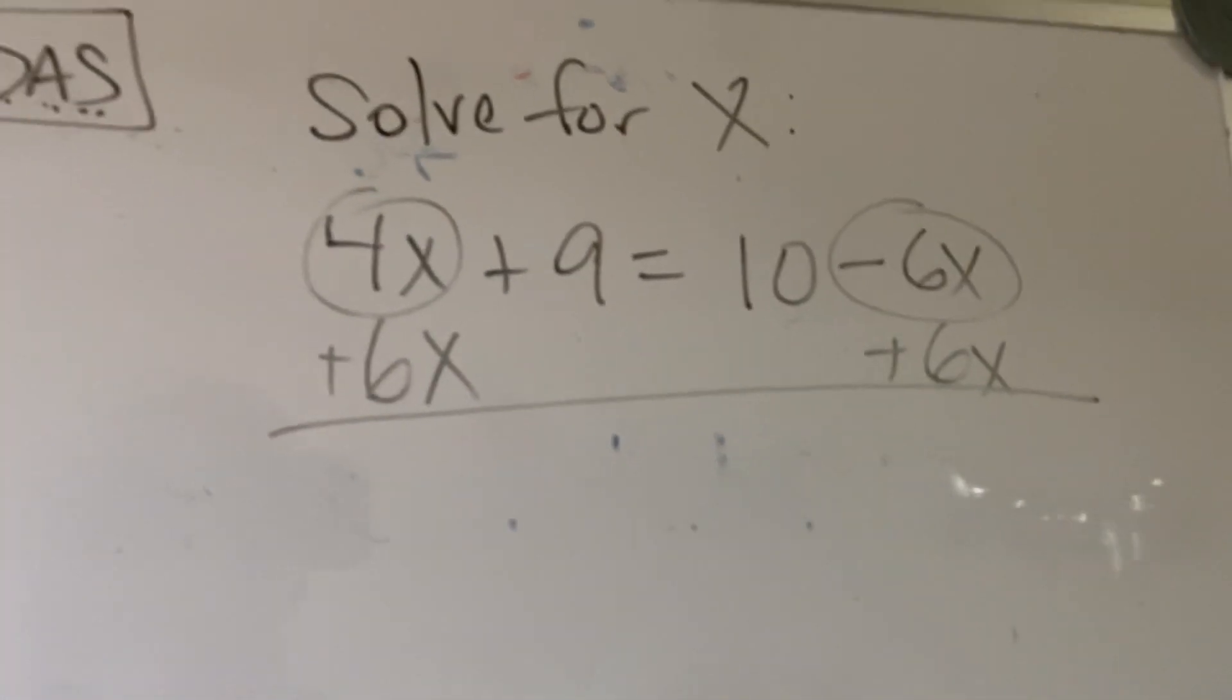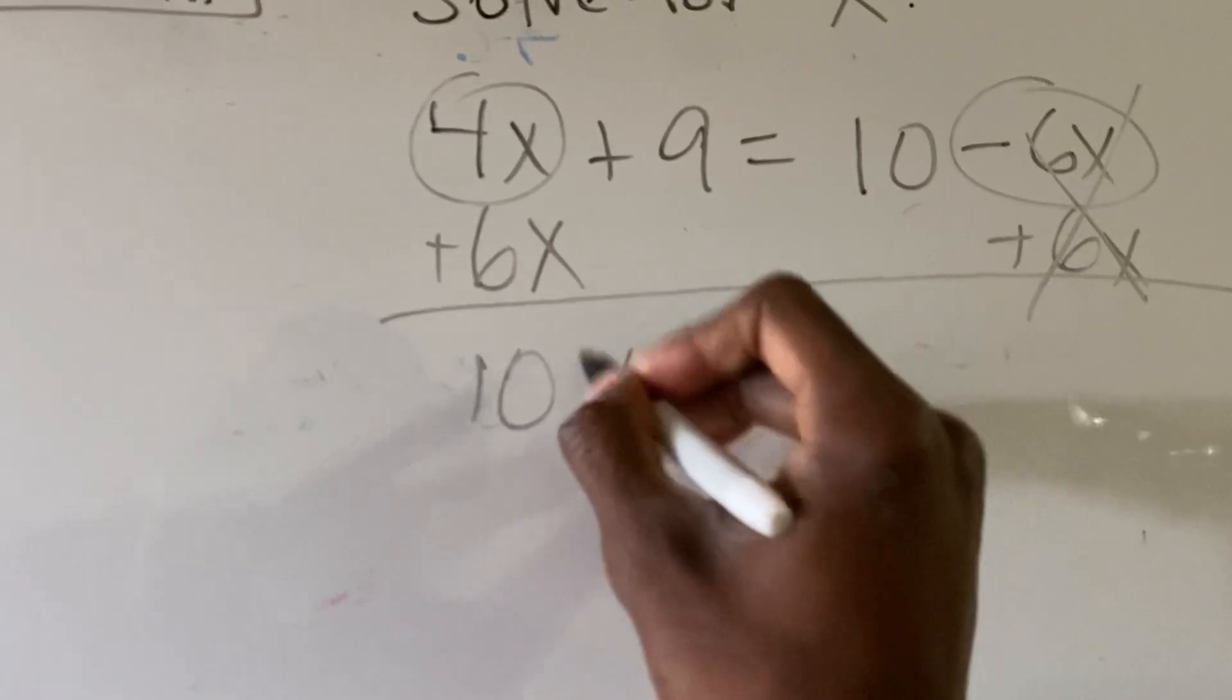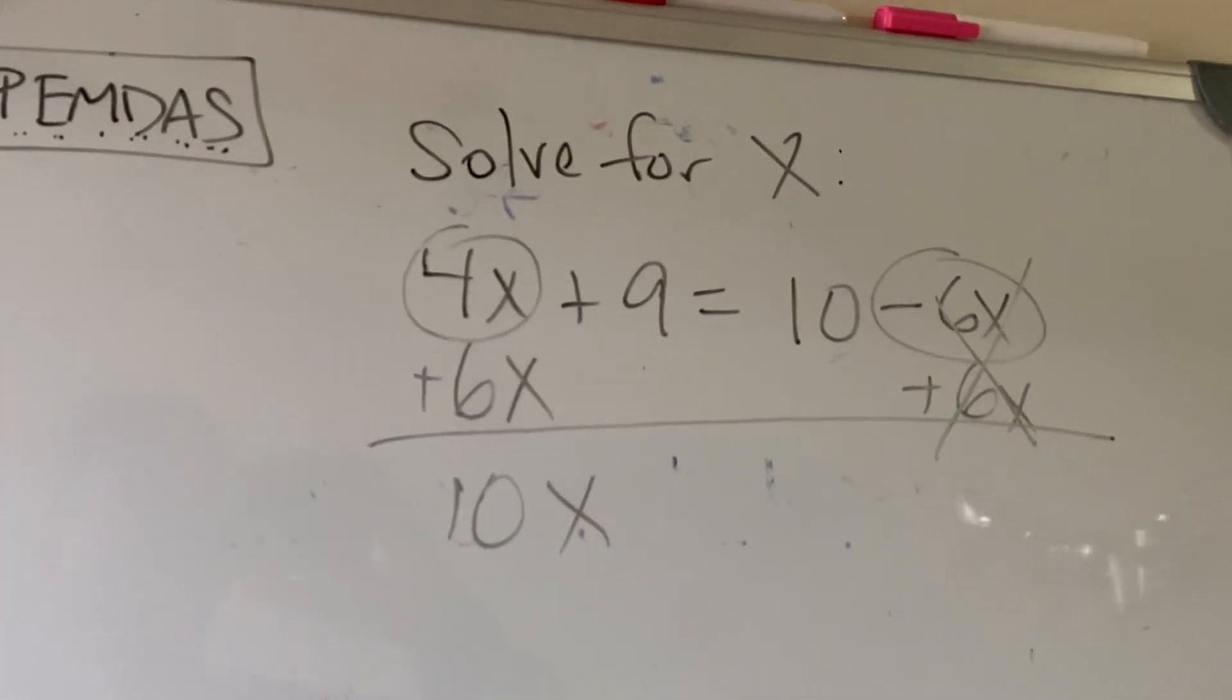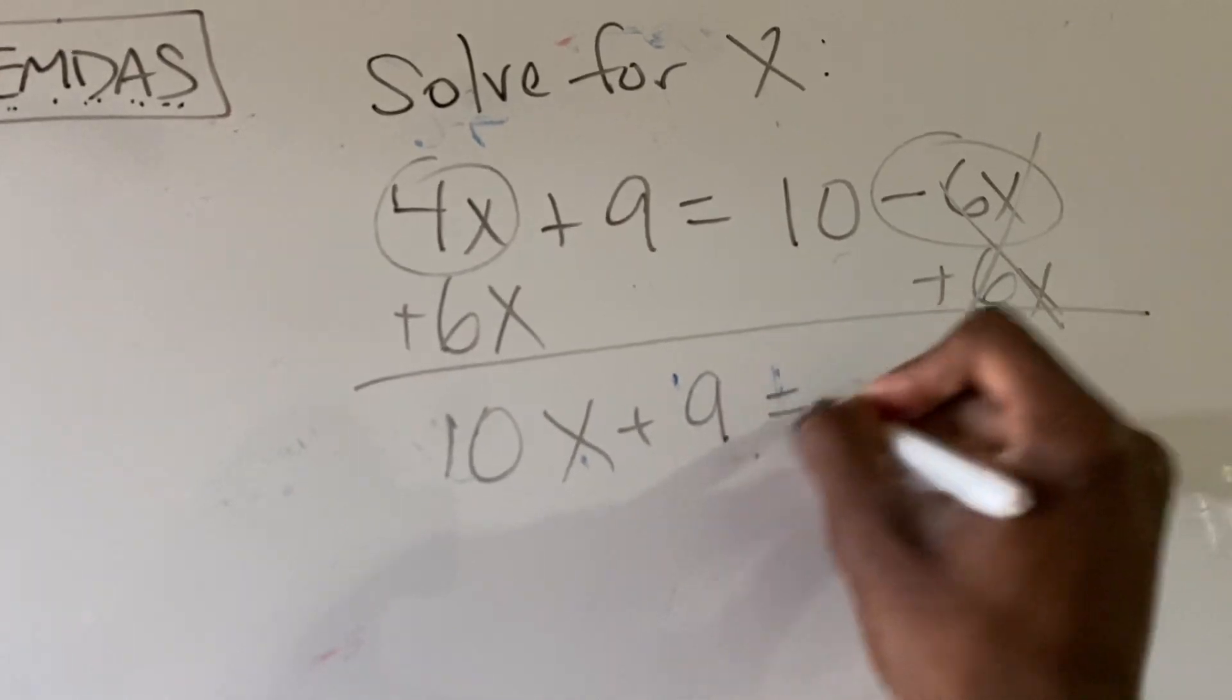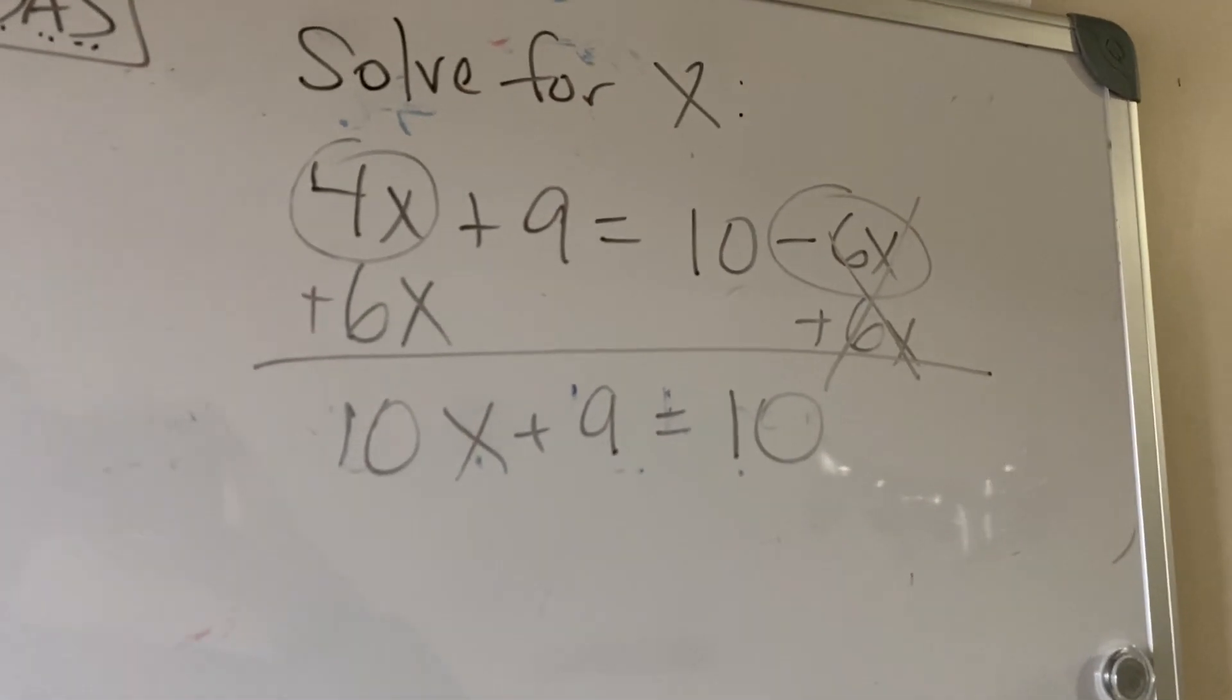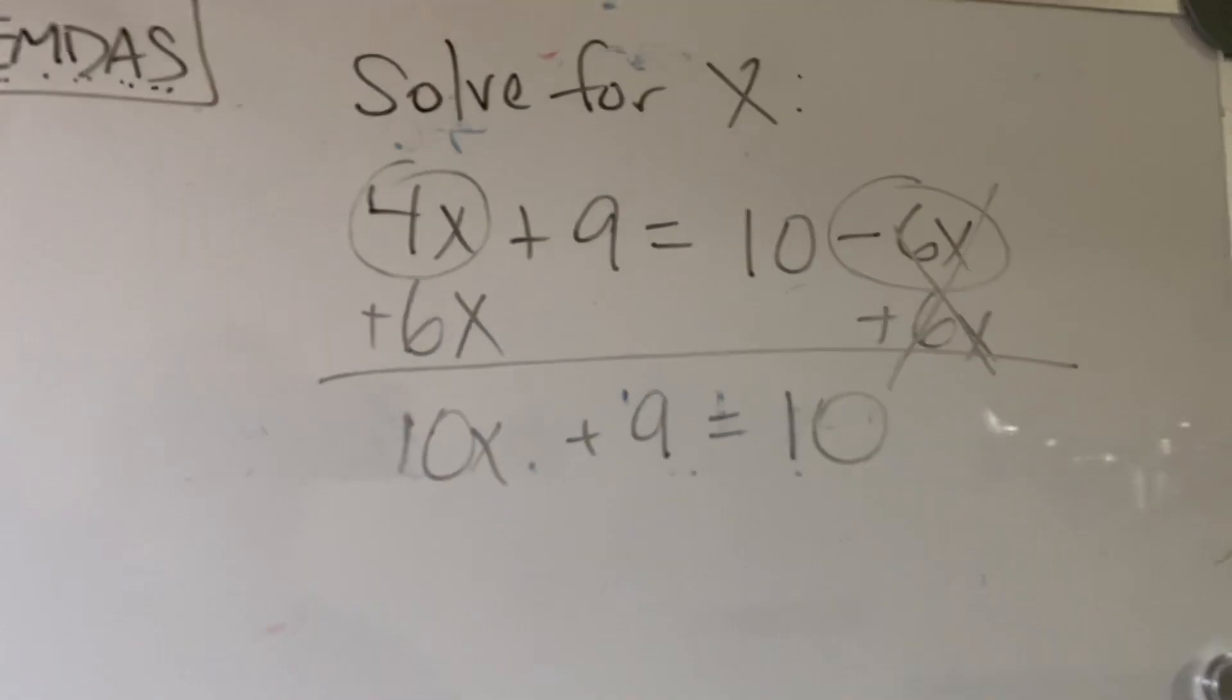And now we can start working. So negative 6 plus 6x is going to be zero. 4x plus 6x is 10x. And then after I make that move and I solve there, I'm going to bring everything else that I did not touch down. This is a very important step that a lot of young folks don't always want to do. They just want to skip past it. No, bring everything down.